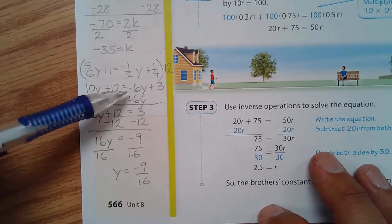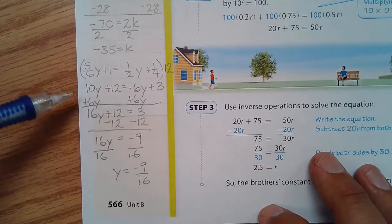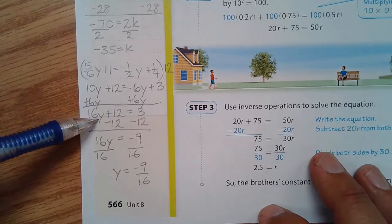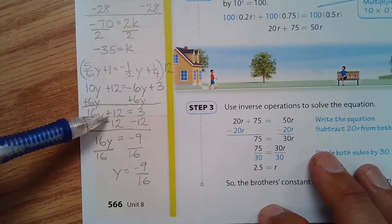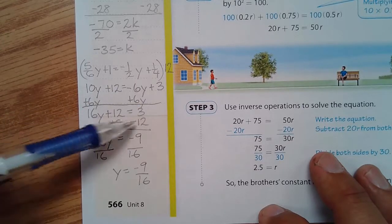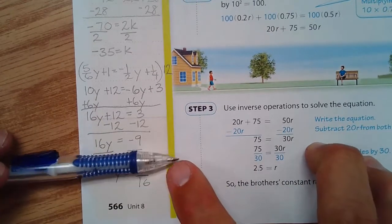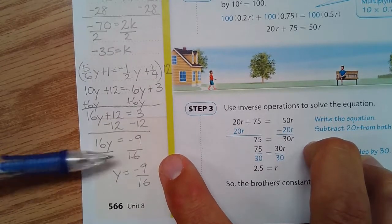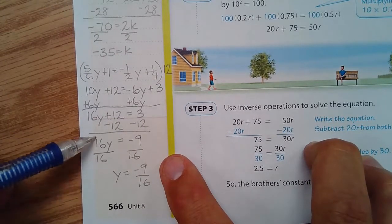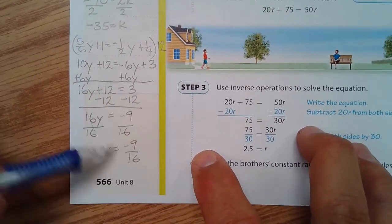Now I have no fractions. I will move the variable terms to the left using inverse operations. 10 plus 6 is 16y. Copy the 12, copy the 3. Inverse operations again, subtracting 12. 3 minus 12 is negative 9. And now I have 16y equals negative 9. I have to divide both sides by 16 to get these to cancel. And I have negative 9 over 16, which is my answer.